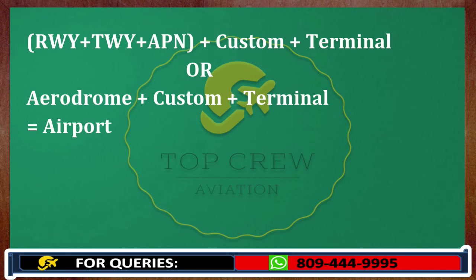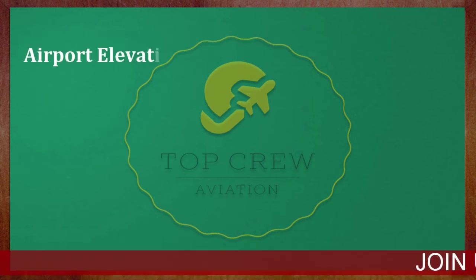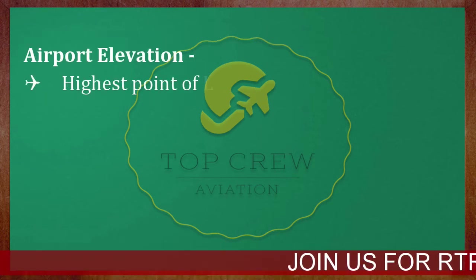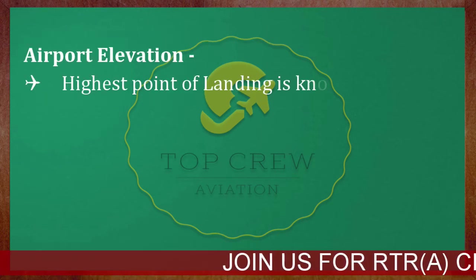I want to make it very clear so that you know, because by the normal definition people get confused between airport and aerodrome. Make sure you do not make this kind of mistake. Aerodrome with customs and terminal is known as airport. What is airport elevation? The highest point of landing is known as airport elevation.